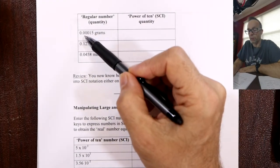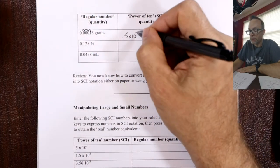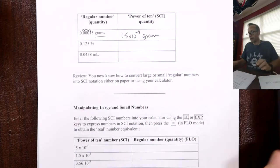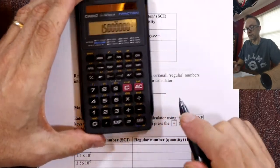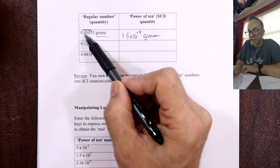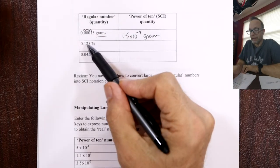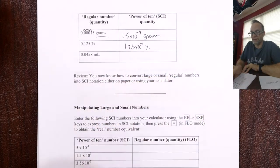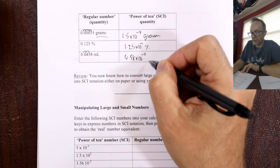First one: 4 jumps to get 1.5 times 10 to the minus 4 grams — don't forget the unit. If I enter 0.0015, it equals 1.5 times 10 to the minus 4. Then just one jump for 1.25 times 10 to the minus 1 percent — percent is actually a unit. And this one: two jumps, 4.58 times 10 to the minus 2 milliliters. Remember, number and unit every time.